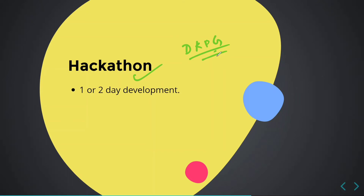You don't always rely on your allocated person — sometimes you have to solve the problem on your own. At the end of each day, check-in interviews are conducted. For example, if it's a two-day program and you completed three steps on day one, they schedule an interview at the end of that day and ask questions related to those three steps. Based on your answers, you receive points that determine whether you proceed to the next stage.